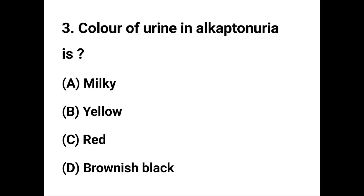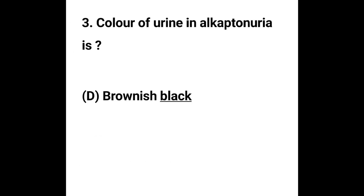Question number 3. Color of urine in alkaptonuria: Option A - Milky, Option B - Yellow, Option C - Red, Option D - Brownish black. The correct answer is Option D, Brownish black. In alkaptonuria, urine will be brownish black in color.